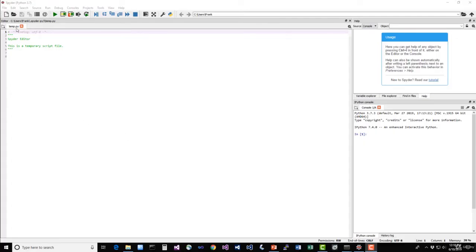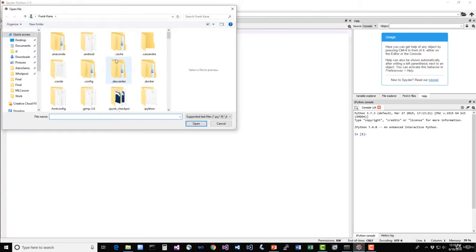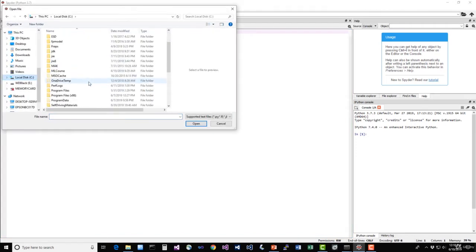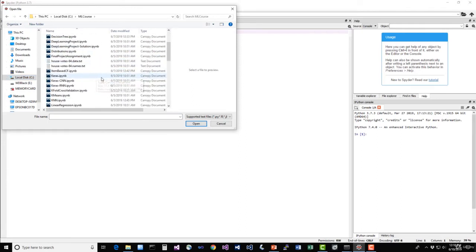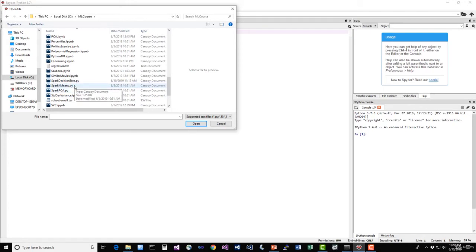So again, from Spyder, let's open up a file here in our course materials. We'll navigate to our course material location under CML course. And this time, we want the script spark-k-means.py. So go ahead and open that up.